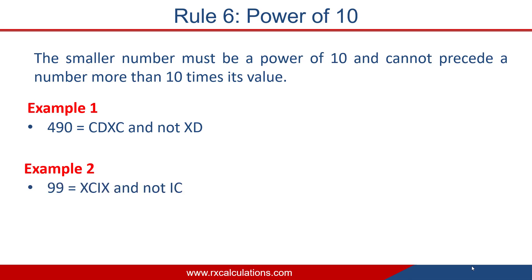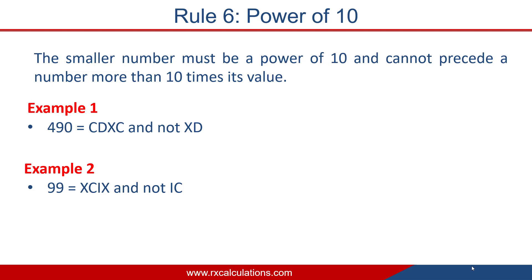Another example: 99 = XCIX. X precedes C: X is 10¹, and 10 × 10 = 100 = C, so that's valid. I precedes X: I is 10⁰, and 10 × 1 = 10 = X, so XCIX is valid. However, IC is not allowed — I is 10⁰, and 10 × 1 = 10, which is less than C (100), so based on the rule of power of 10, you cannot write IC.